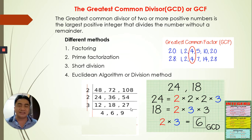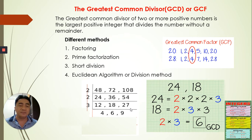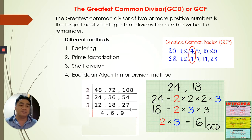Today, we just continue our lesson from yesterday about the greatest common divisor or greatest common factor. We have different ways or methods to get the GCD or the GCF. First, we have the factoring method by listing all the factors for a particular integer. We have the prime factorization — factoring using the prime numbers. We have the short division method, and we have the Euclidean algorithm or the long division method.